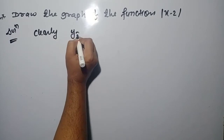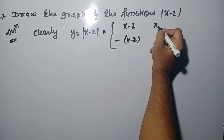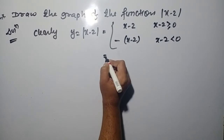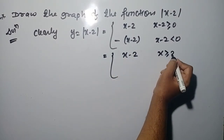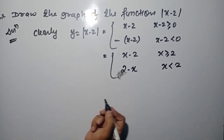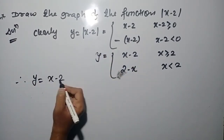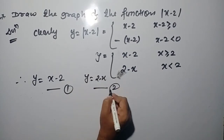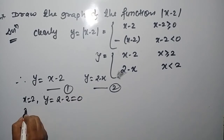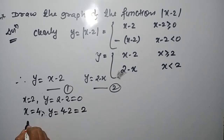Let us see the solution. Clearly, y = |x - 2|, which means it can be positive or negative: (x - 2) when x - 2 > 0, and -(x - 2) when x - 2 < 0. So we define: y = x - 2 if x > 2, and y = 2 - x if x < 2. Suppose x = 2, so y = 0. If x = 4, y = 4 - 2 = 2.